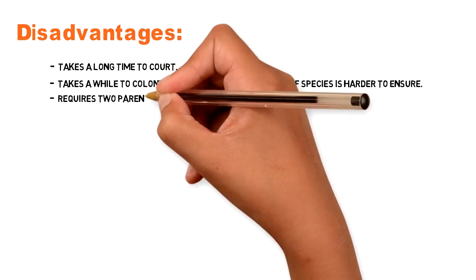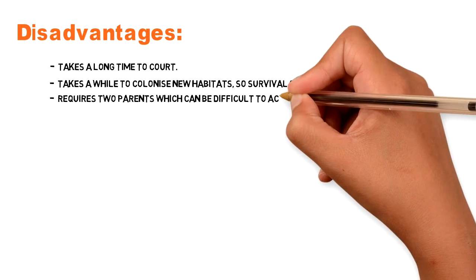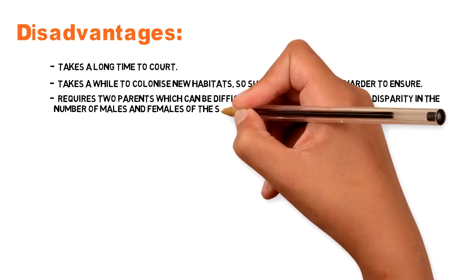Requires two parents, which can be difficult to achieve when there is a disparity in the number of males and females of the species in the area.